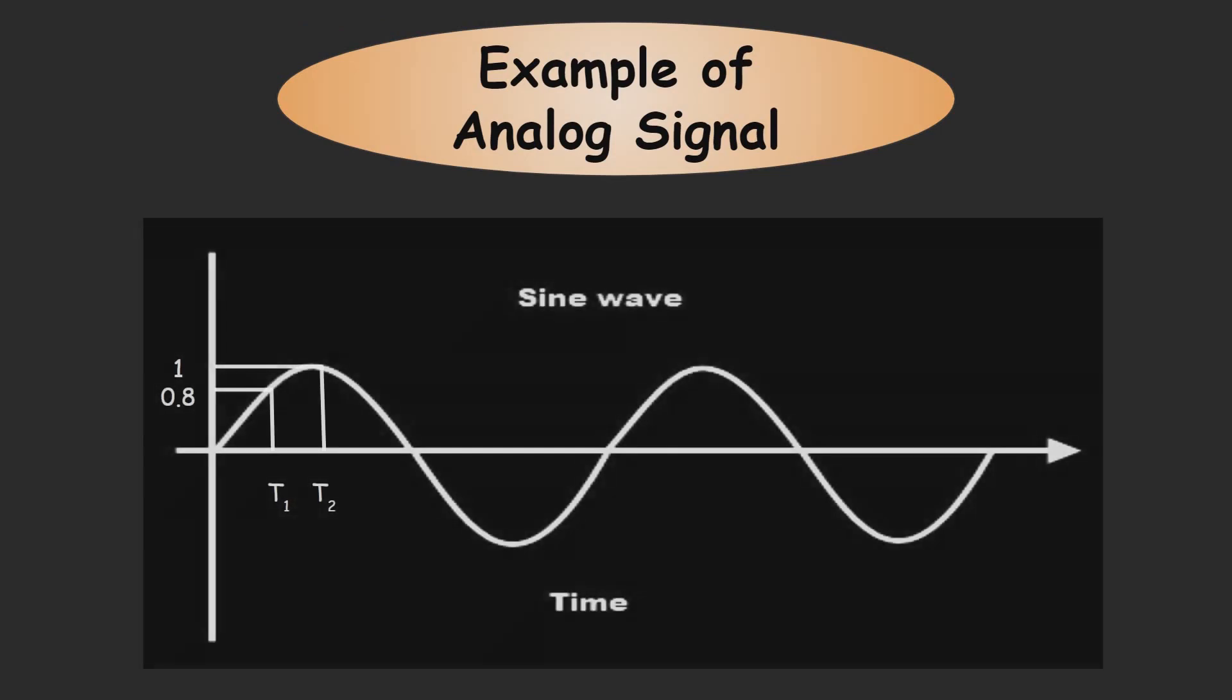Now we will see the example of analog signal. As you can see in diagram, analog signal is in form of sine wave. The signal is varying continuously with time. At time t1 amplitude is 0.8 and at time t2 amplitude is 1.